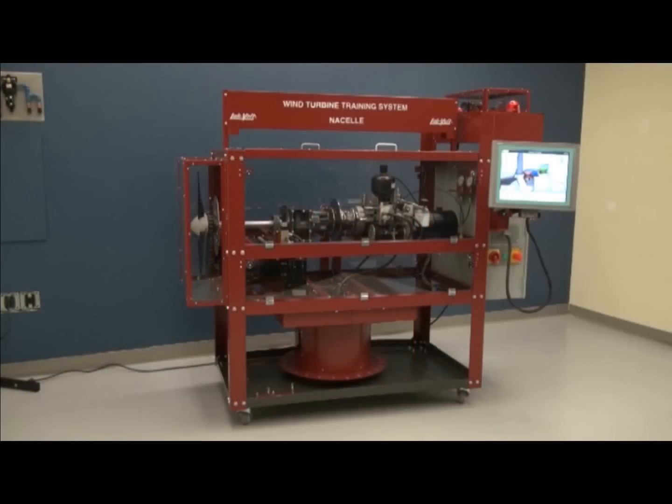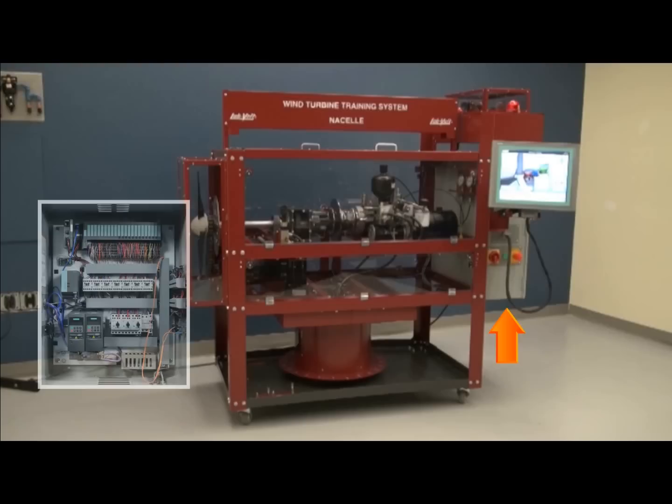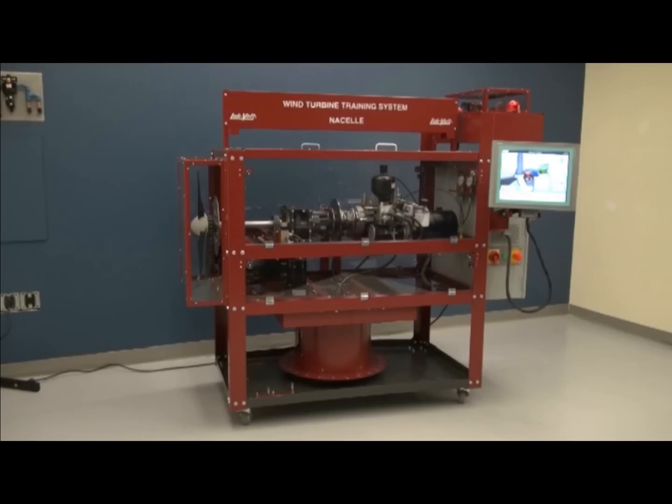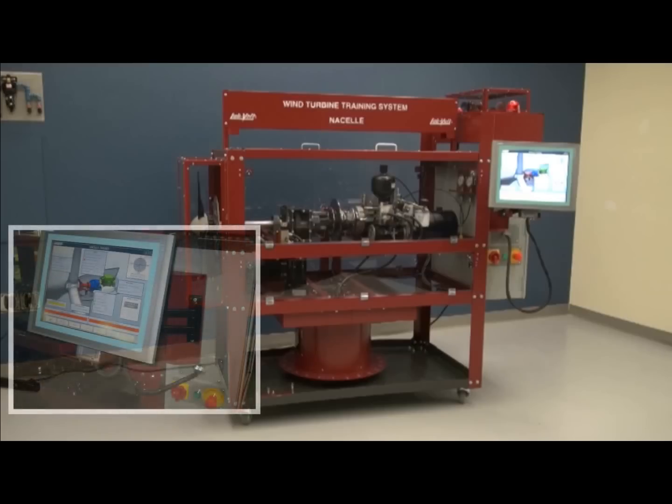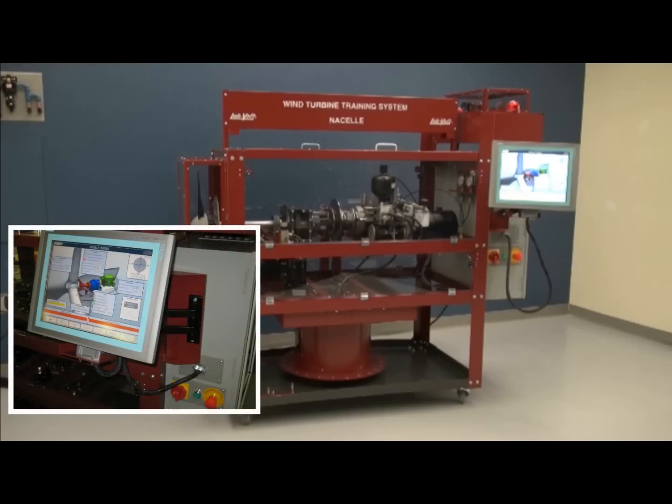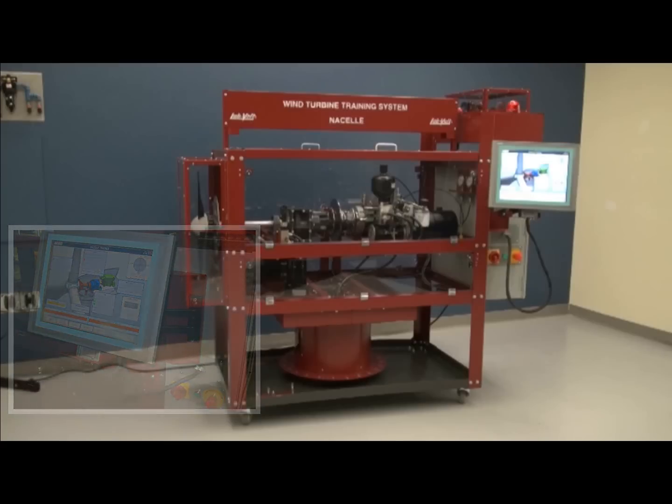After that, on the nacelle training system, you also have an electrical panel which includes all the electronics and control components to control the whole nacelle. We also have a touchscreen industrial computer which includes an HMI or human-machine interface and a software PLC which will command the whole system.